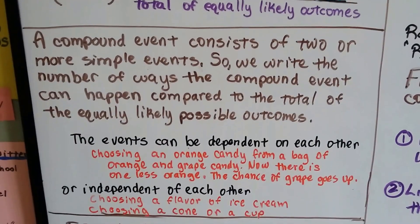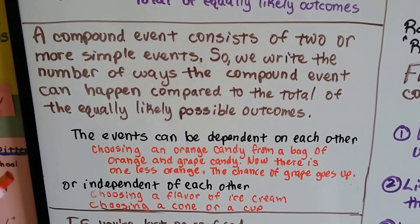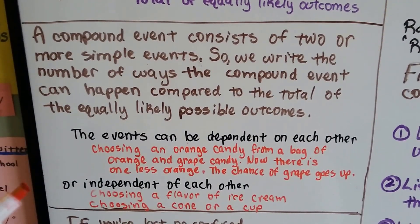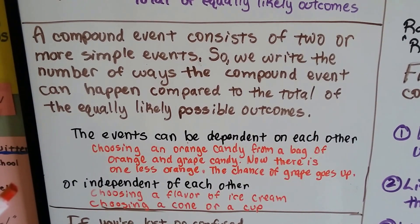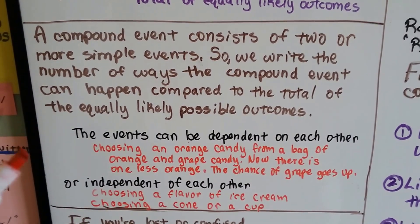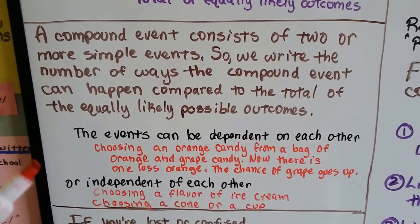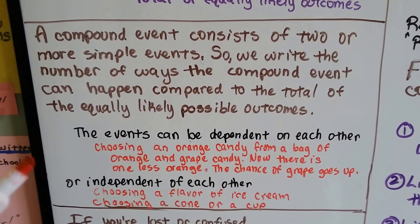A compound event consists of two or more simple events. So we write the number of ways the compound event can happen compared to the total of equally likely possible outcomes.